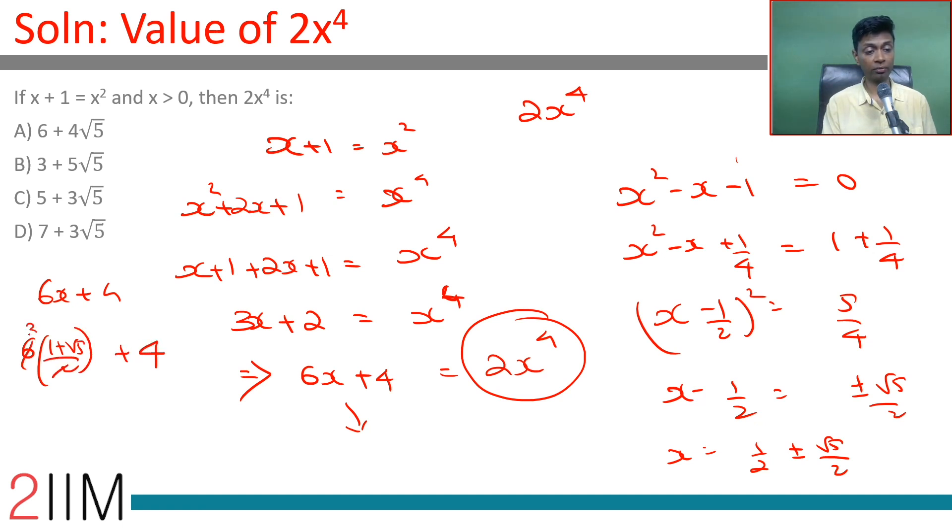This is 3(1 + √5) + 4 = 3 + 3√5 + 4 = 7 + 3√5 or 3√5 + 7. The key here is to somehow find x and then write x⁴ in terms of x. We managed that, which makes this a far simpler question.